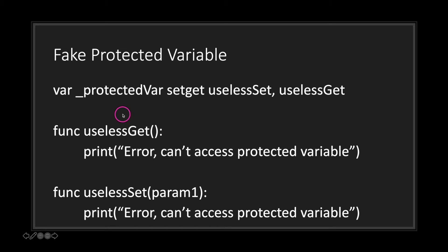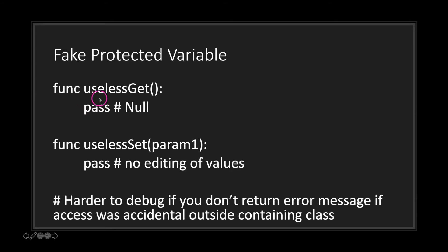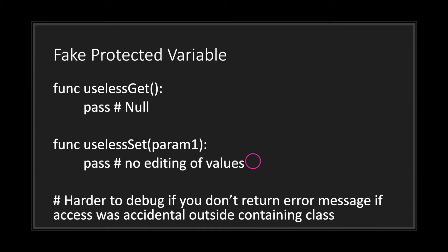In this case our getter function will just print to console 'can't access protected variable,' and our setter will do the same — keeping in mind that your setter function still needs to accept a single argument. You can also just use the pass keyword, which means we're not going to throw an error for empty functions. When using pass in the getter, we'll still return null by default, and in the setter we won't actually do anything.